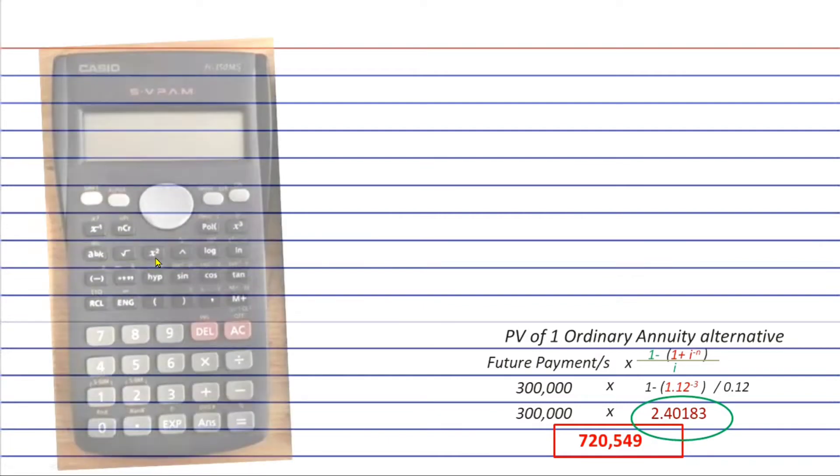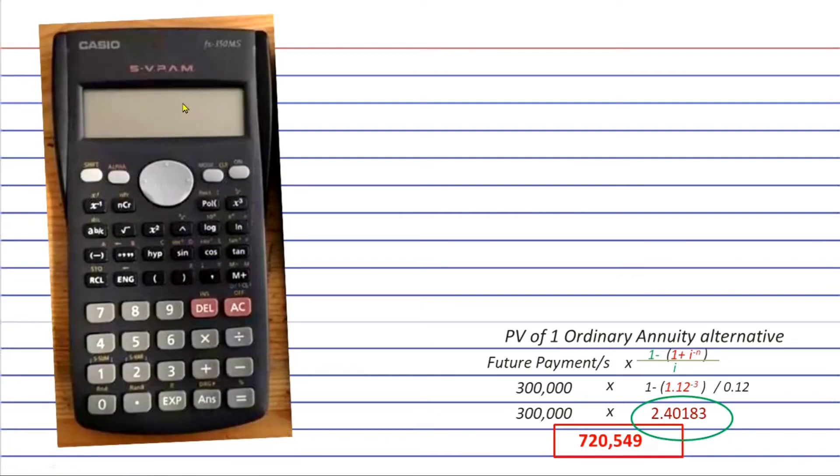Let's start with the scientific calculator. If you want to get the ordinary annuity factor, just type the numerator first. That's the first step. In the calculator, type 1 minus open parenthesis 1.12 raised to the power of negative 3 and then close parenthesis. Let's ignore the denominator first. After that, step 2, hit the equals button and you will get this.